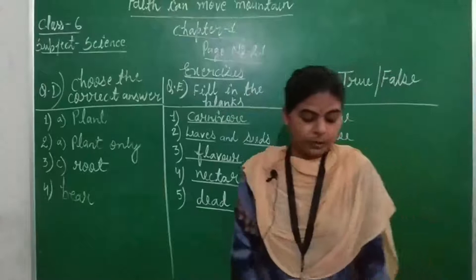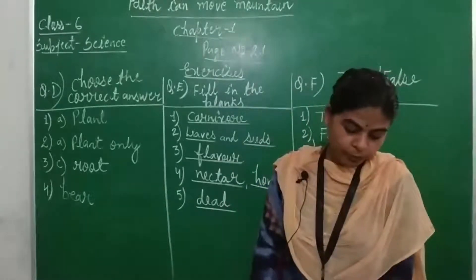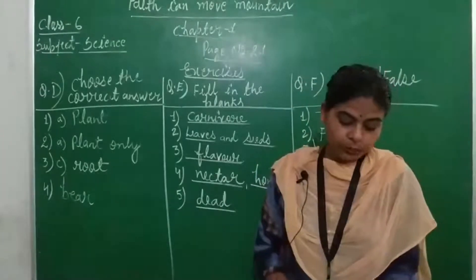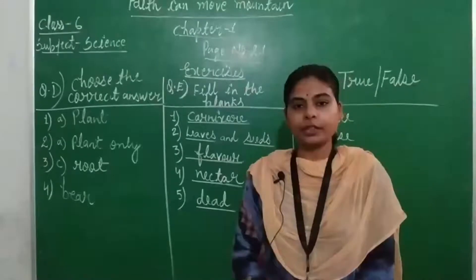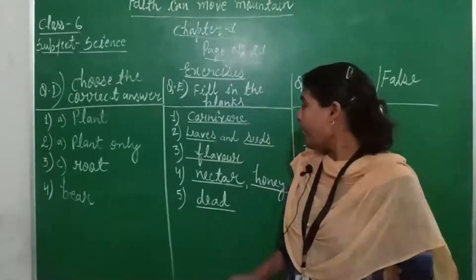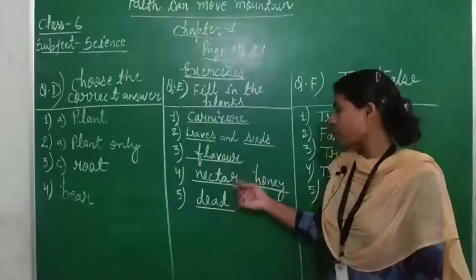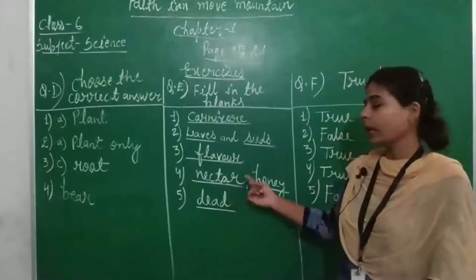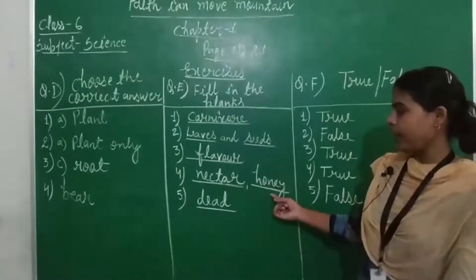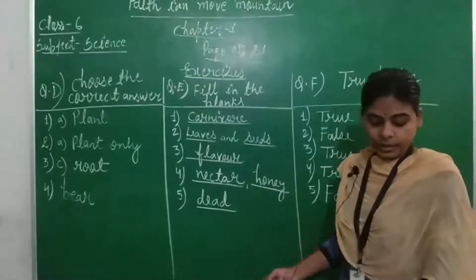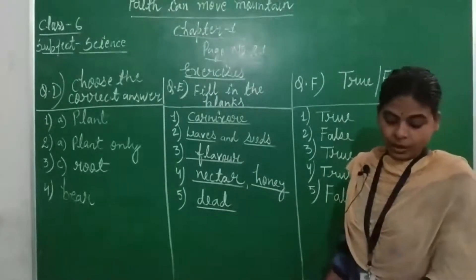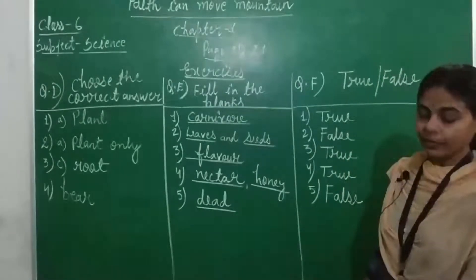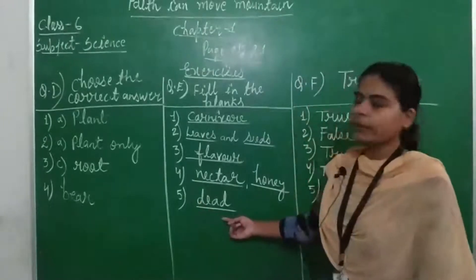Fourth blank: bees collect from flowers and convert into a dash. Bees collect nectar from flowers and convert it into honey. So in the first blank fill 'nectar' and in the second blank fill 'honey'. Fifth blank: scavengers eat flesh of — dead animals. Fill 'dead'.